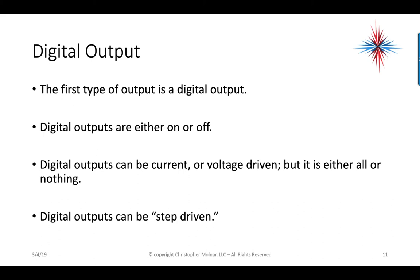The first type of output is the digital output — it's either on or off, all or nothing. For example, if we're using a 24-volt output device, it is either receiving 24 volts or receiving nothing. Digital outputs can also be step-driven. There's a device called a step motor: we send a digital signal, a blip of 5 volts, and the valve opens to the next position. If it's not open far enough, we send another 5-volt signal, and the valve opens to another position.